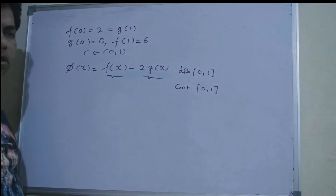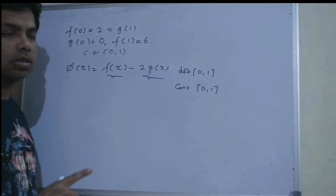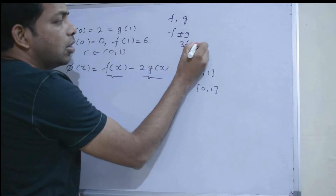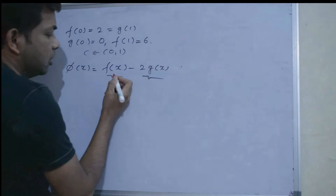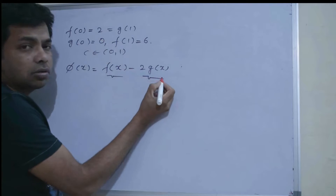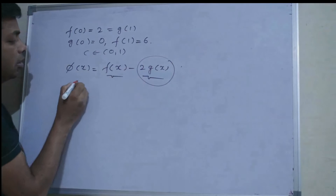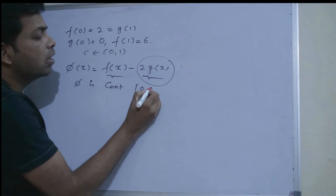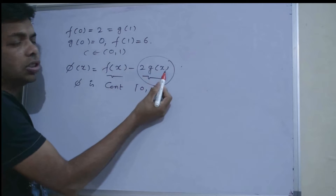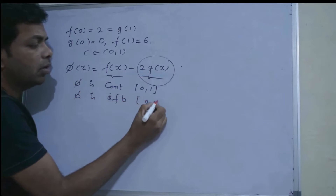Now some conditions on continuity and differentiability: if two functions are continuous, their difference is continuous, their addition is continuous, and their scalar multiplication is also continuous. So φ(x) = f(x) - 2g(x): since f(x) is continuous on [0,1] and g(x) is also continuous, 2g(x) is continuous, and therefore φ is continuous on [0, 1]. Also, since f and g are differentiable on [0, 1], f - 2g is also differentiable, so φ is differentiable on [0, 1].